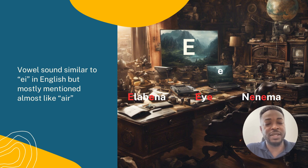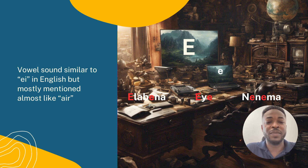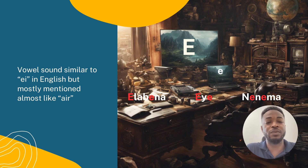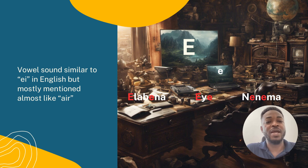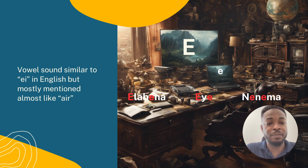Let's see a few words to illustrate: 'labana' and 'a.' In the second word you'll notice the 'e' or 'a' sound is really being mentioned as 'a,' but the third one goes back to the first sound: 'menema.' So we have 'labana,' 'a,' and 'menema.'